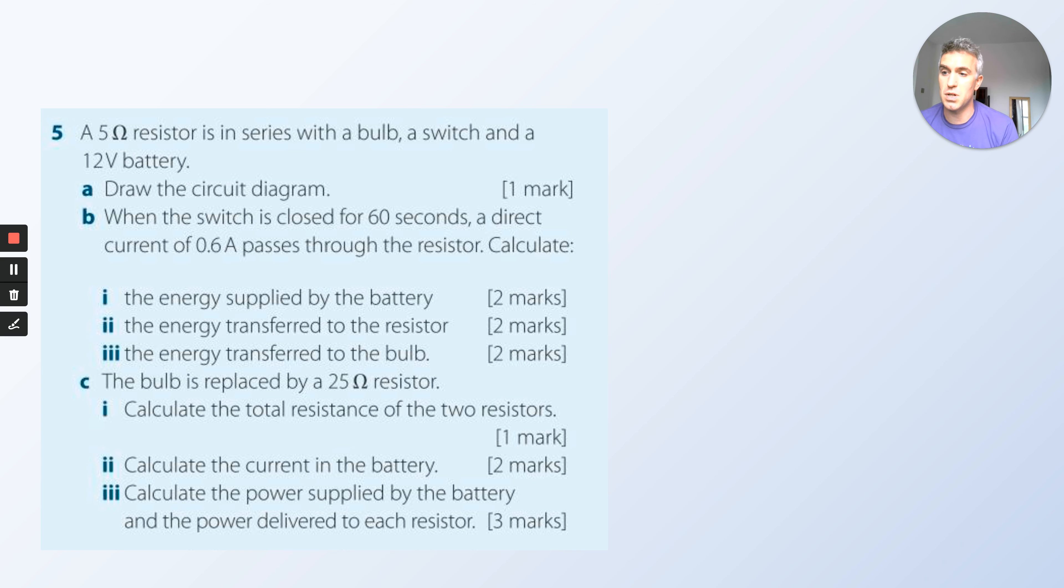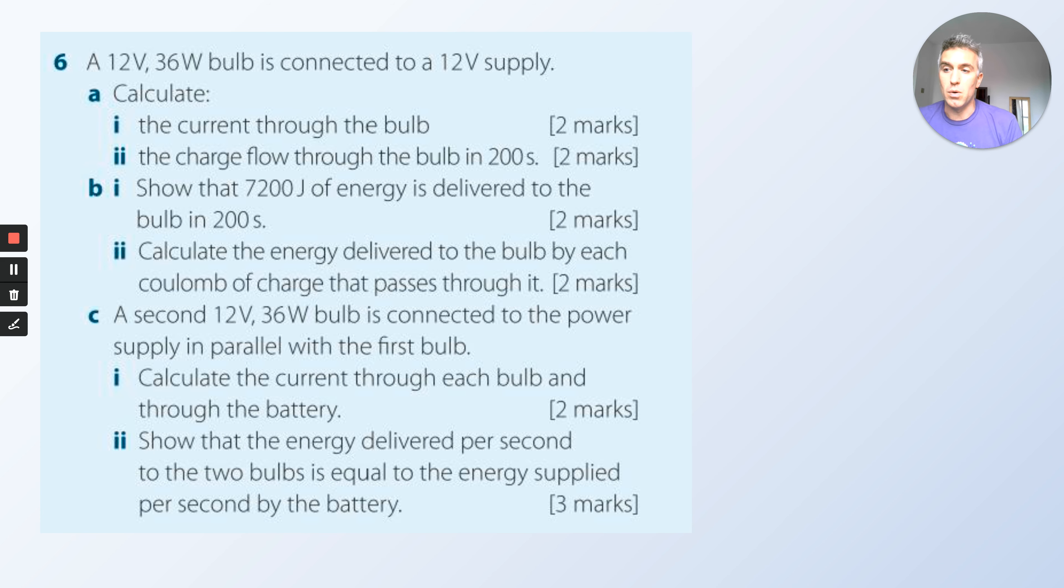So the energy supplied by the battery, the energy transferred to the resistor, and the energy transferred to the bulb. The bulb is now replaced by a 25 ohm resistor. Calculate the total resistance of the two resistors. Note, they're in series. Remember the rules for resistors in series. Now calculate the current in the battery and calculate the power supplied by the battery and the power delivered to each resistor. All just small simple equations, just might have to do a few of them.